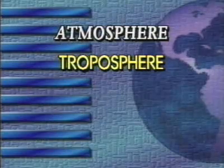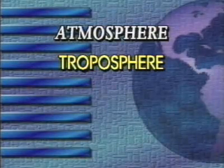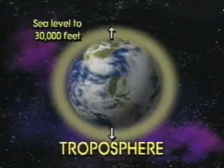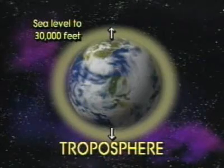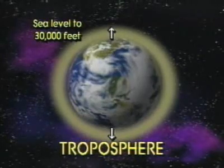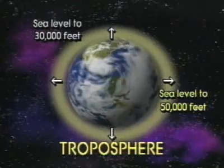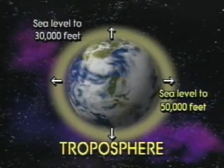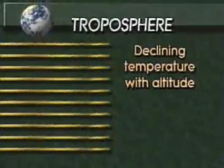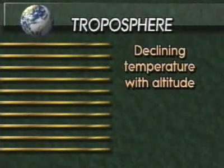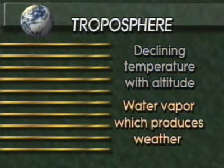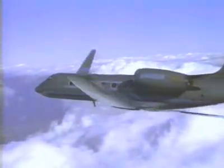The first division is the troposphere. It ranges from sea level to 30,000 feet at the North and South Pole, up to 50,000 feet at the equator. This egg shape is due to the cooling and heating of the Earth's surface. The main characteristics of the troposphere are declining temperature with altitude and water vapor which produces weather. This is where the majority of aviation activity takes place.